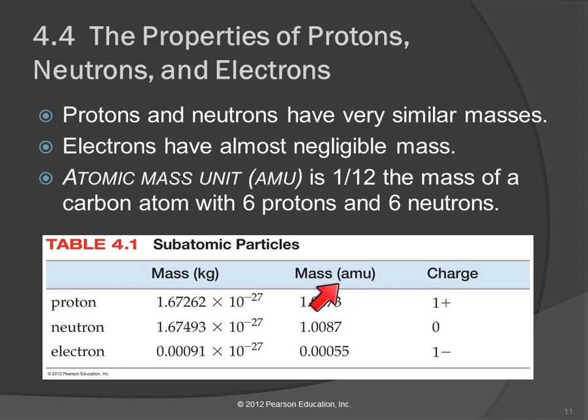And they called it atomic mass unit. Very creative, isn't it? The abbreviation is AMU, and we say AMU, not MU. So in AMUs, a proton is 1.0073 and a neutron is 1.0087. Very close.